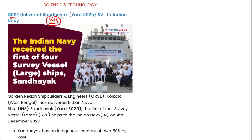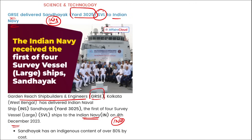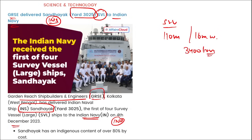GRSE ने deliver किया INS Sandhayak (Yard 3025) to the Indian Navy। यह SVL — Survey Vessel Large ship — है। यह 4th survey vessel large ship रहेगा जो deliver किया गया to the Indian Navy। 4 December को किया गया था, क्योंकि Indian Navy Day 4 December को observe किया जाता है। GRSE — Garden Reach Shipbuilders and Engineers — ने इसको develop किया, Kolkata, West Bengal में। यह ship 110 meter long, 16 meter wide है, 3400 tonnes displacement करता है, 2 diesel power engines से powered है, और 18 knots तक की speed है।